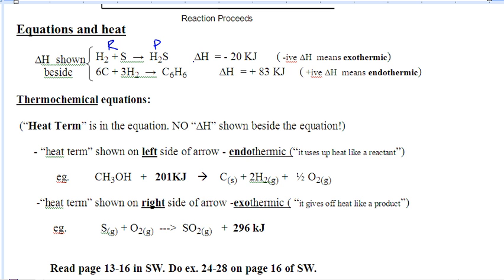It's basically telling you that the delta H is negative 20, so that's exo. This one, it's telling you that it's positive 83, so that's endo.